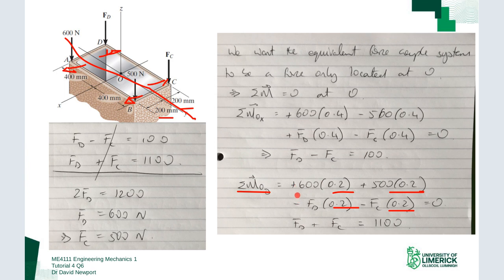So we work through it. So 600 times 0.2, anti-clockwise rotation becomes positive. 500 times 0.2 anti-clockwise rotation becomes positive. Then we've FD is FD times 0.2 clockwise rotation so it's negative, and ditto for FC. So that gives us FD plus FC equals 1100.